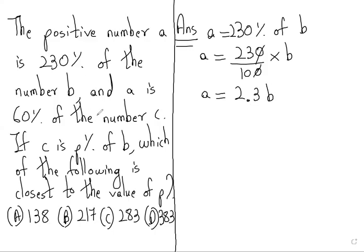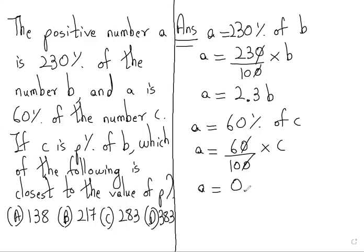Similarly, A is 60% of the number C. So we write A equals 60 over 100 times C. Simplifying, A equals 6 over 10, which is 0.6C.